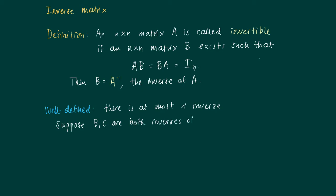B and C are both inverses of A. What we know is that A times B equals B times A equals the identity matrix, and also A times C equals C times A equals the identity matrix.